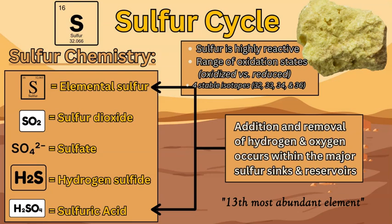Sulfur comes in different variations in the cycle: elementary sulfur, sulfur dioxide (SO2), sulfate (SO4²⁻), hydrogen sulfide (H2S), and sulfuric acid (H2SO4), and these come in different quantities around the cycle. One unique trait of sulfur is its yellow coloring and its distinctive smell, which is like rotten eggs.